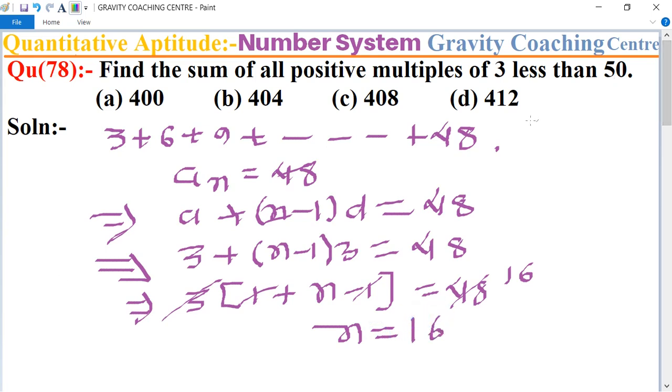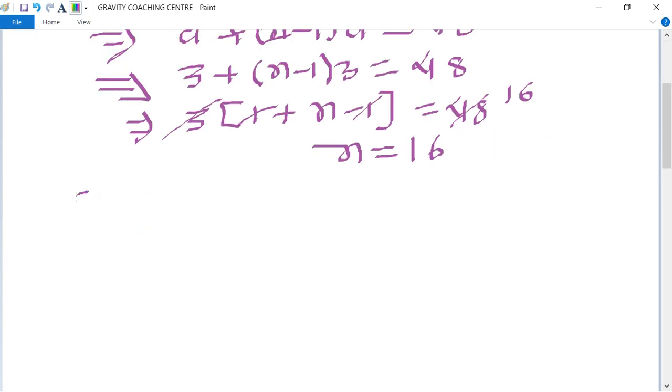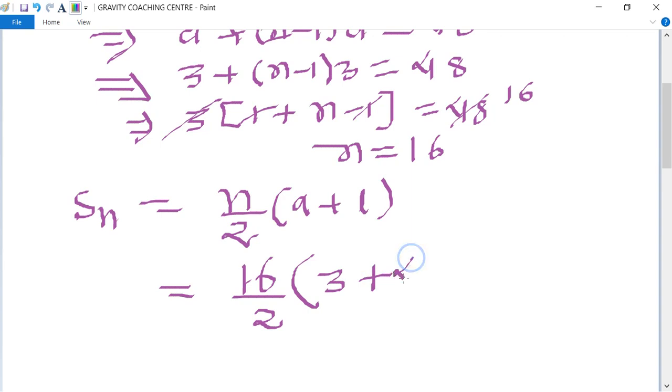So what is the sum of these numbers? Now we use the formula of Sn of AP, its formula is n upon 2 bracket of a plus last term, equal to n is 16, value of a is 3, and last term is 48.